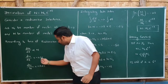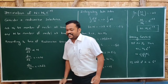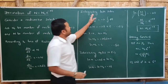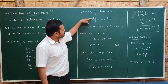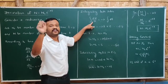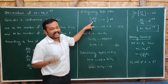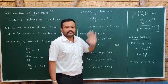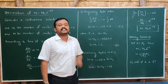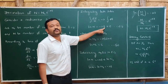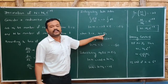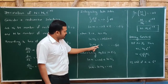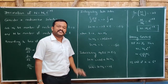Rearranging: dN/N = −λ dt. Integrating both sides, we get ln(N) = −λt + C, where C is the integration constant. To find C, we apply the initial condition: at t = 0, N = N₀, which gives C = ln(N₀). Substituting back: ln(N) − ln(N₀) = −λt.